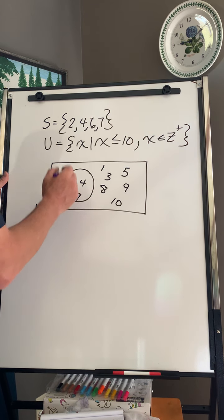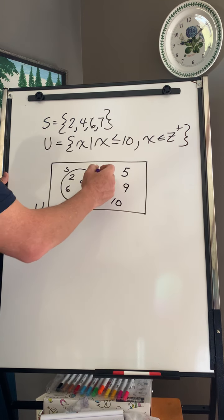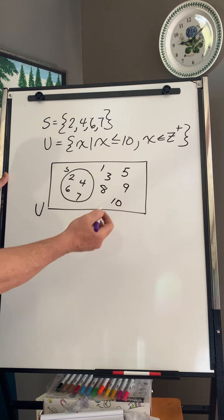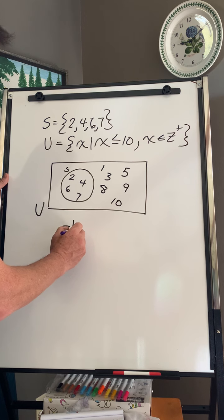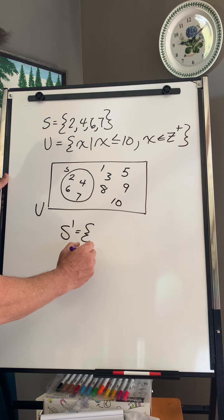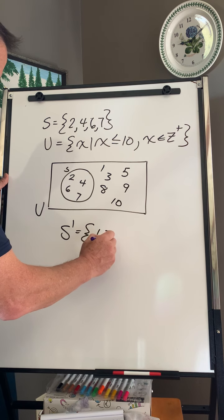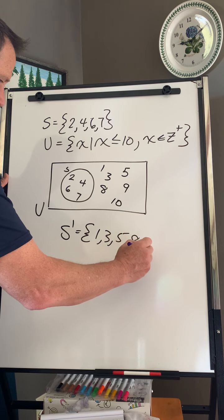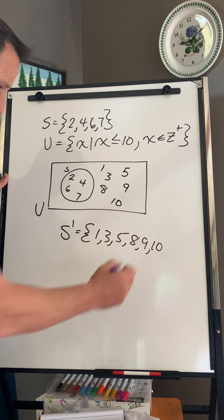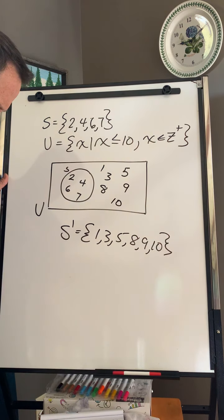So what does that tell us? S is this. These are all my complements. So my complement to S is going to be 1, 3, 5, 8, 9, 10.